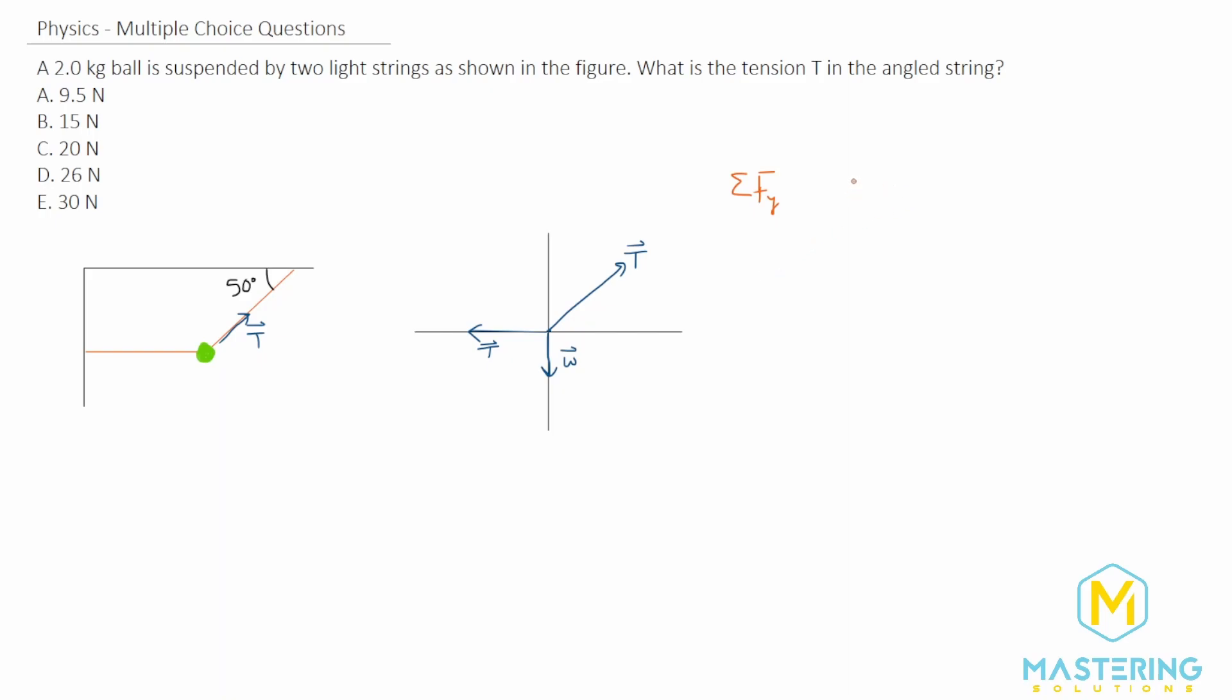For the y-component of tension, the angle is 50 degrees. Since it's opposite to the angle, we use sine of 50. So we have T sin 50. Then we subtract the weight because we're only looking at y-direction forces.